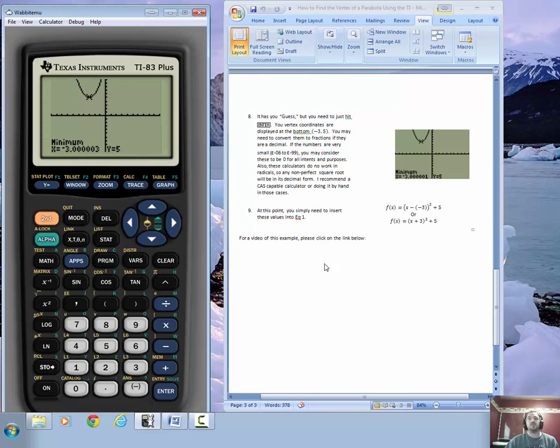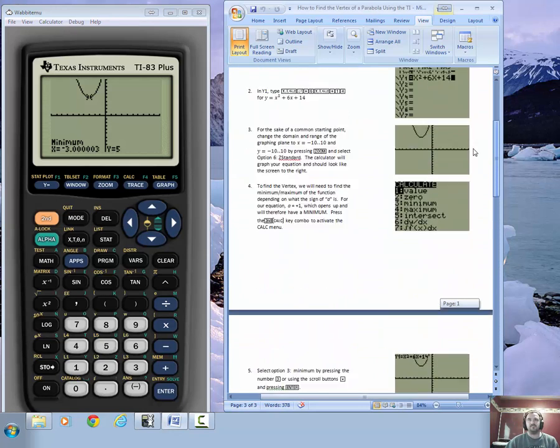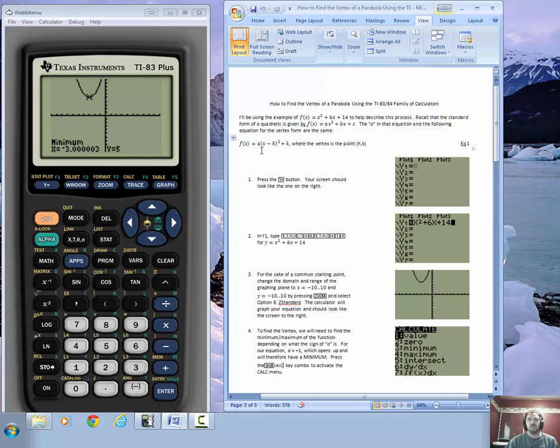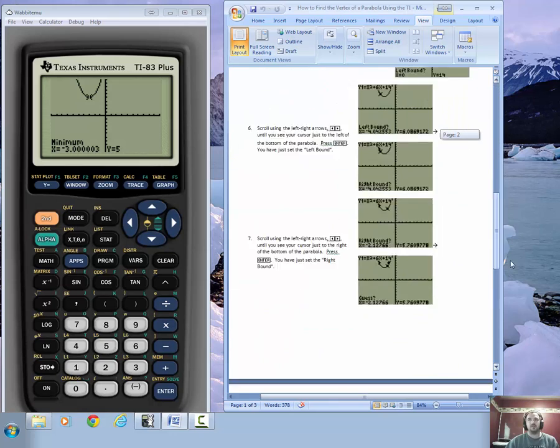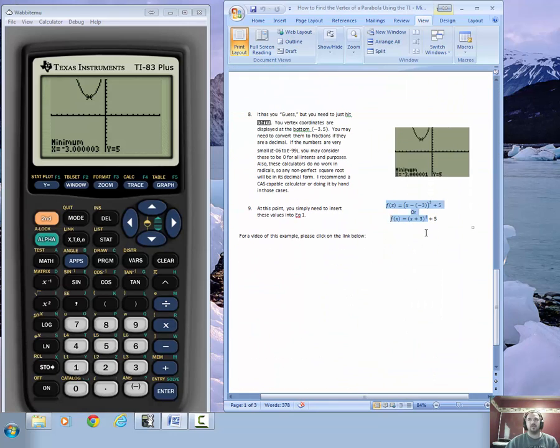So, now we have to put that back into an equation. Well, in the original form, as I scroll back up, you'll notice that it's x minus h. Well, h is negative in this case, so it has to be x minus a negative 3 and then a plus 5 at the end. And that's how we get these two things here.